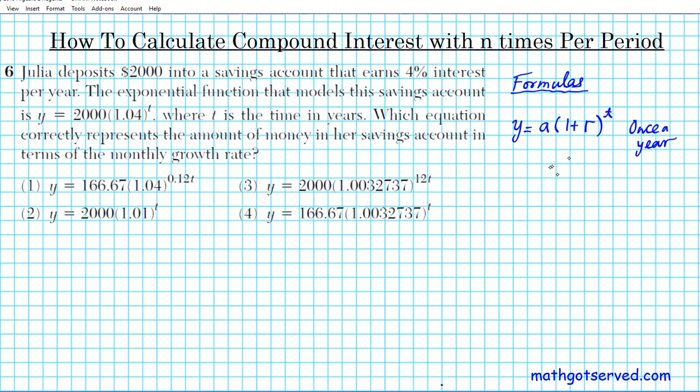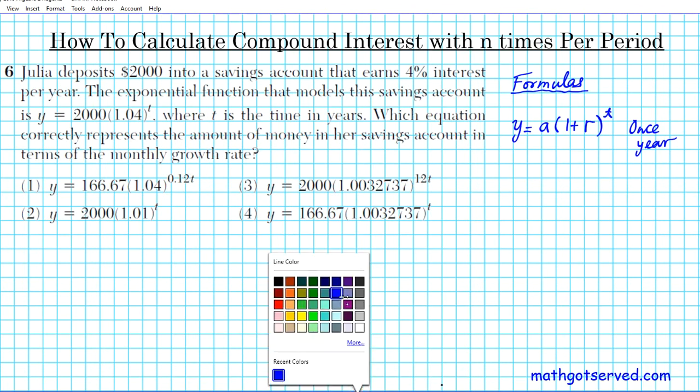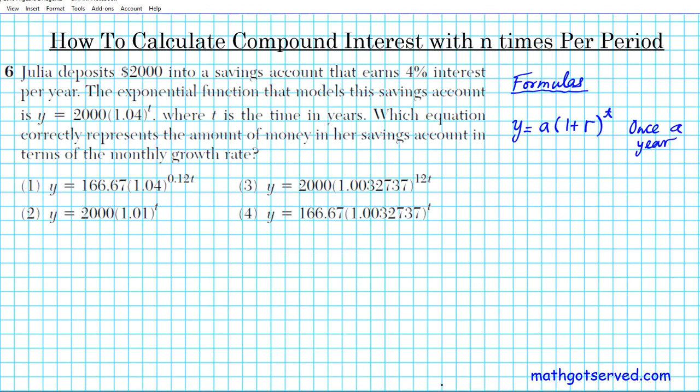Now if it's compounded n number of times a year, the formula will be slightly different. So it could be quarterly, which is four times a year, it could be biannually, which is twice a year, or it could be monthly. Monthly you have 12 months in a year. In this particular case it says monthly, so we're looking at 12 times per period because we have 12 months in one year.